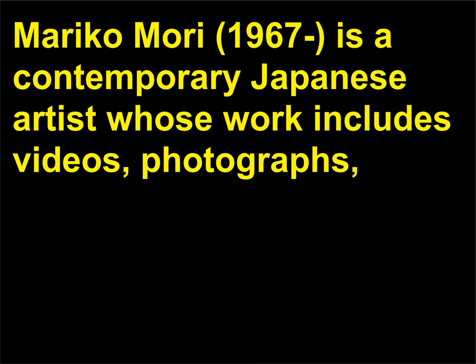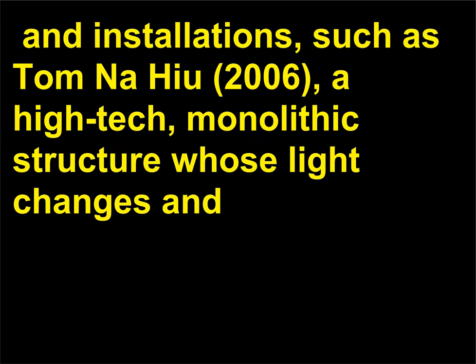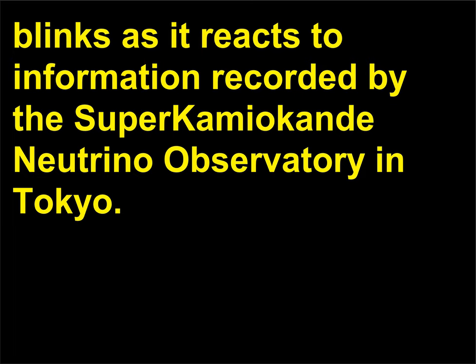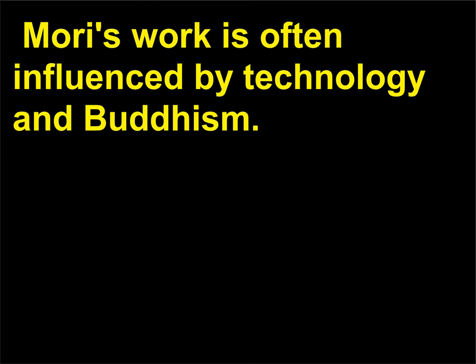Who is Mariko Mori? Mariko Mori, born 1967, is a contemporary Japanese artist whose work includes videos, photographs, and installations, such as Tom Na H-iu, 2006 — a high-tech, monolithic structure whose light changes and blinks as it reacts to information recorded by the Super-Kamiokande neutrino observatory in Tokyo. Mariko Mori's work is often influenced by technology and Buddhism.